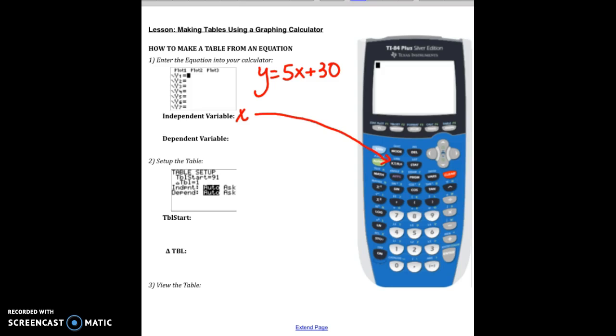And in your graphing calculator when you do it, you have to use this button here. It says x, t, theta, n. You have to choose that button to be your independent variable.